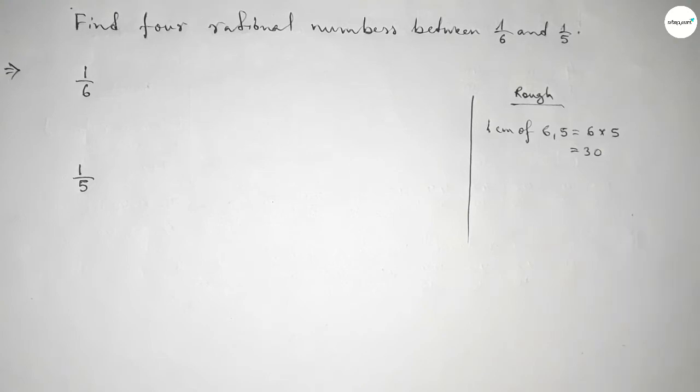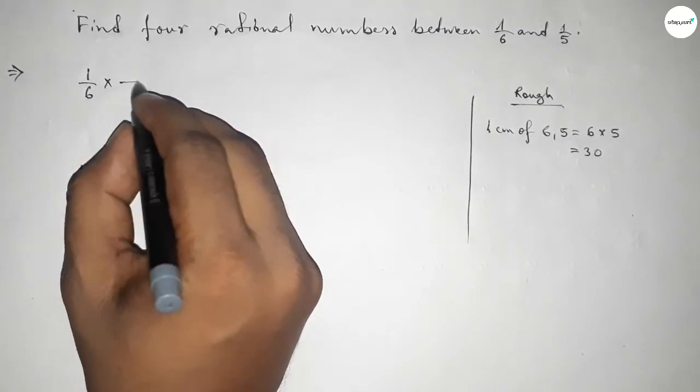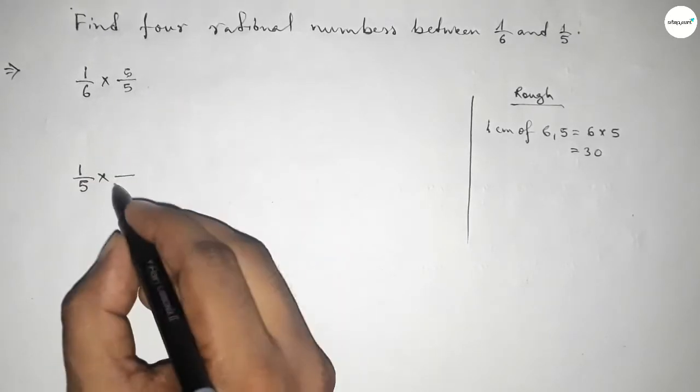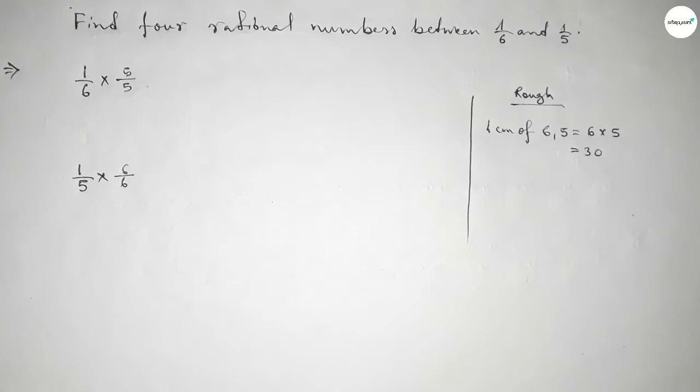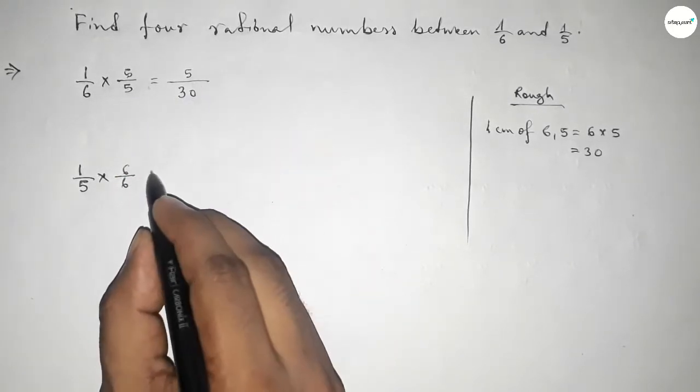So this is 30. We should multiply here with 5 and here with 6 to get the denominator of both 30. So this is 5 over 30 and this is 6 over 30.